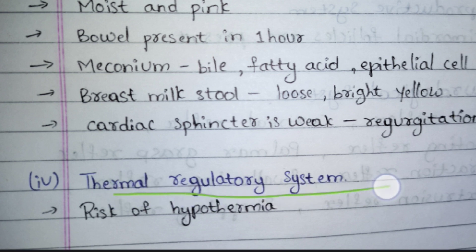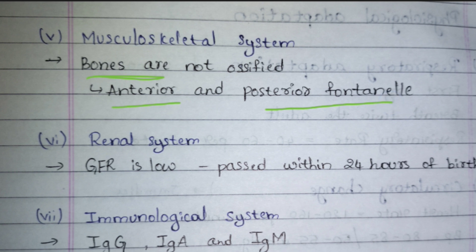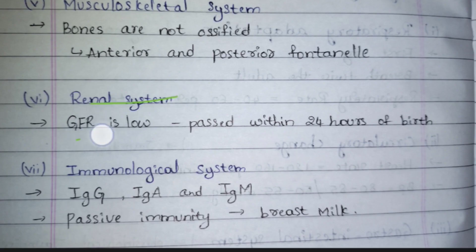The thermal regulatory system: after birth there is a risk that the baby's temperature will drop too low — a risk of hypothermia — because inside the womb the temperature is warm, but outside the environment is cold. Regarding the musculoskeletal system, at birth the bones are not strong, and even a minor mistake can cause bone damage. Very importantly, both the anterior and posterior fontanelles will be open at the time of birth and gradually close as days pass.